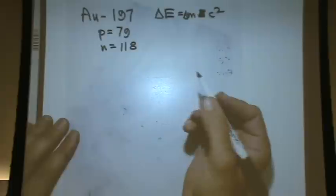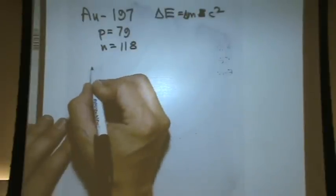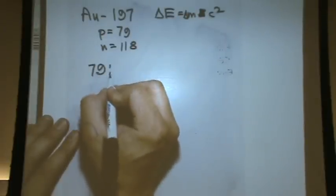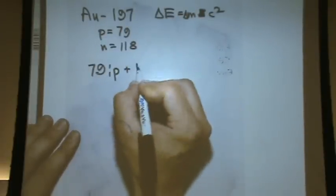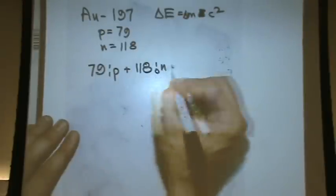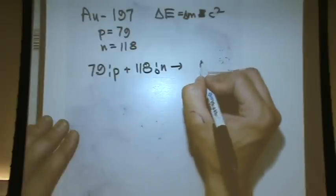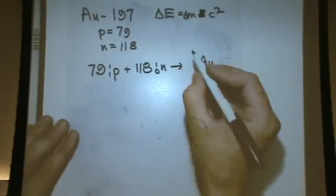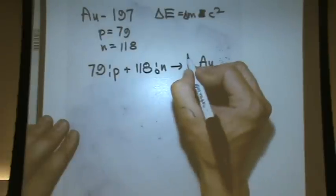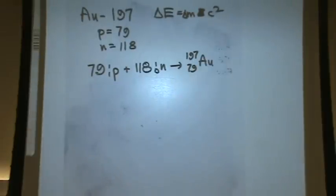Get out your calculators and you can double check that. So you would write 79, 1, 1 proton plus 118, 1, 0 neutrons goes to gold. And on the bottom is 79 on the top 197.